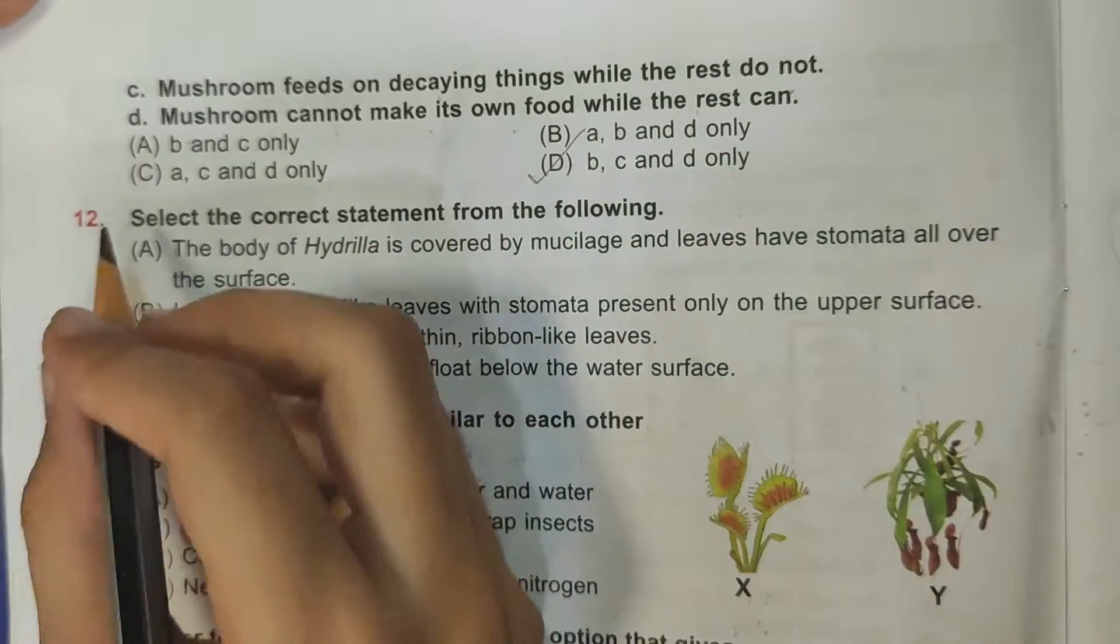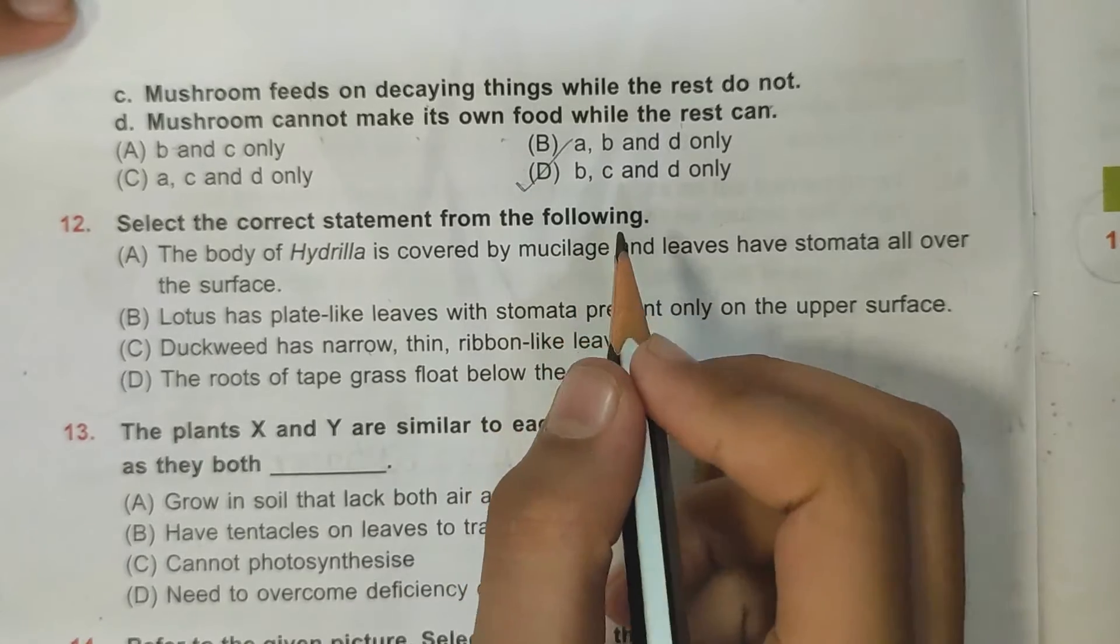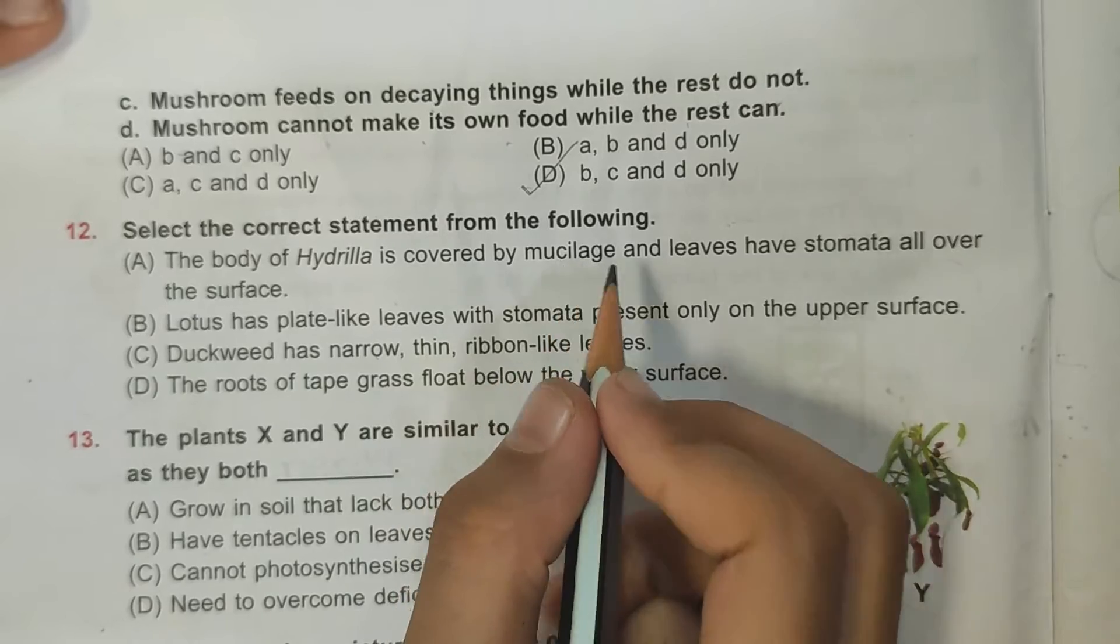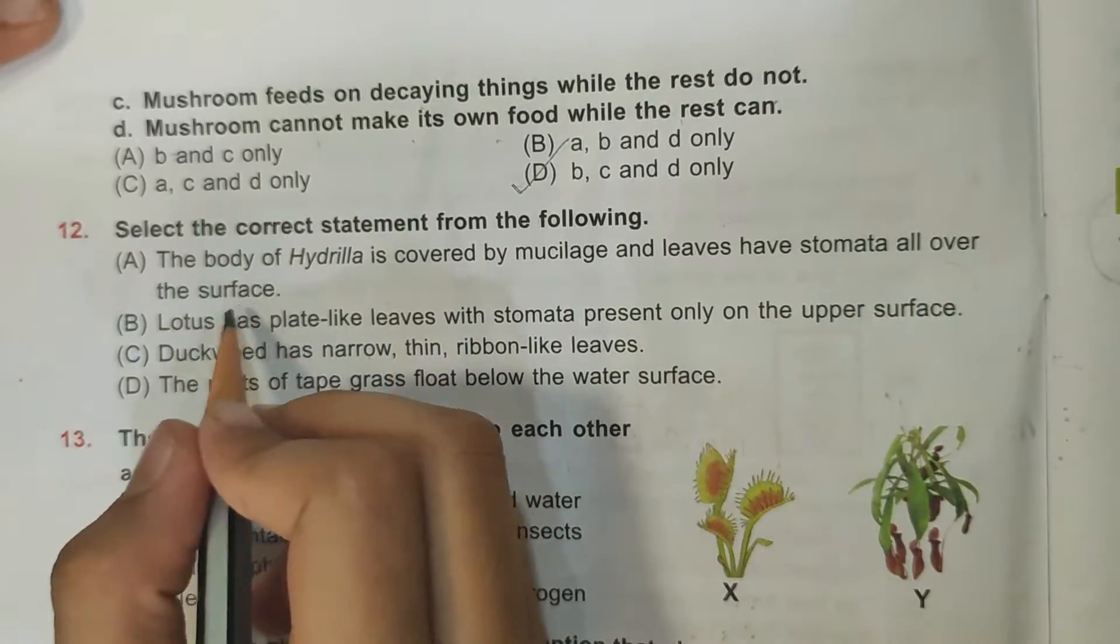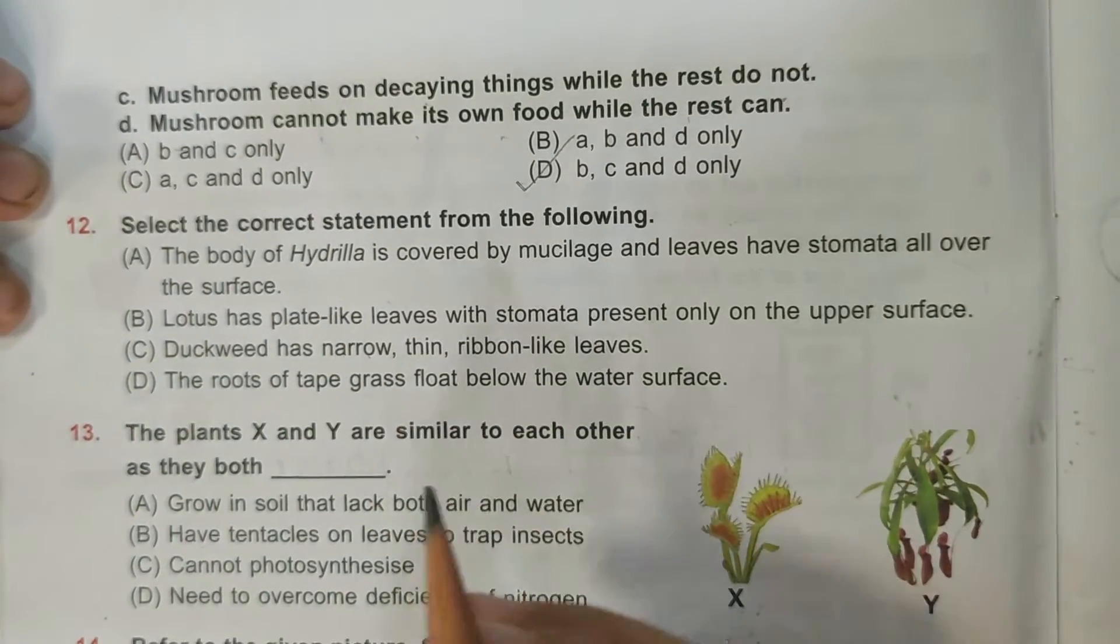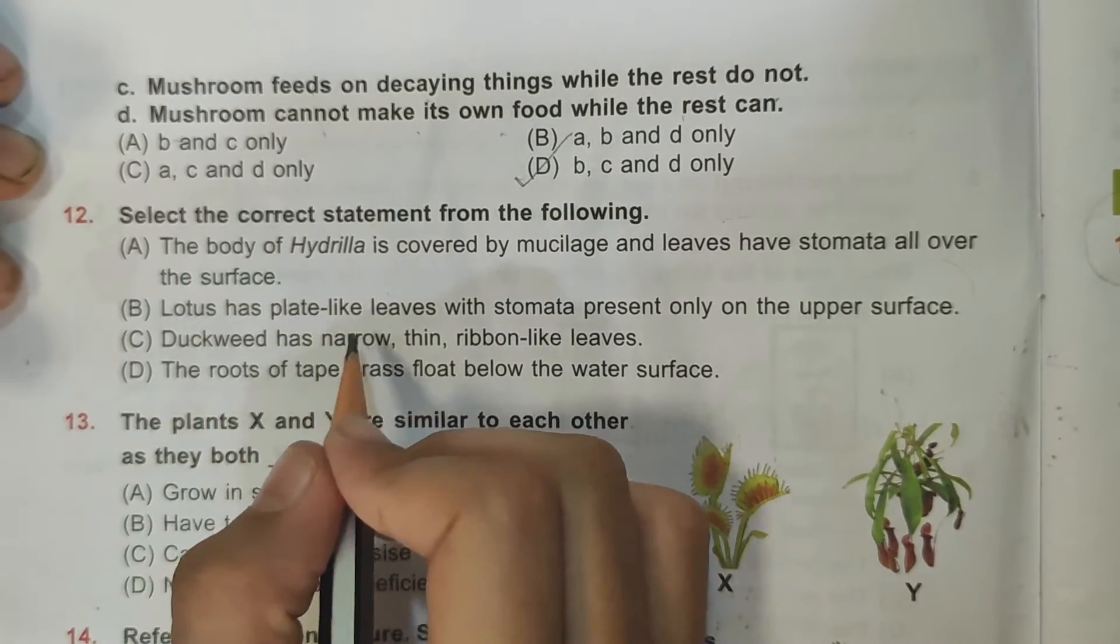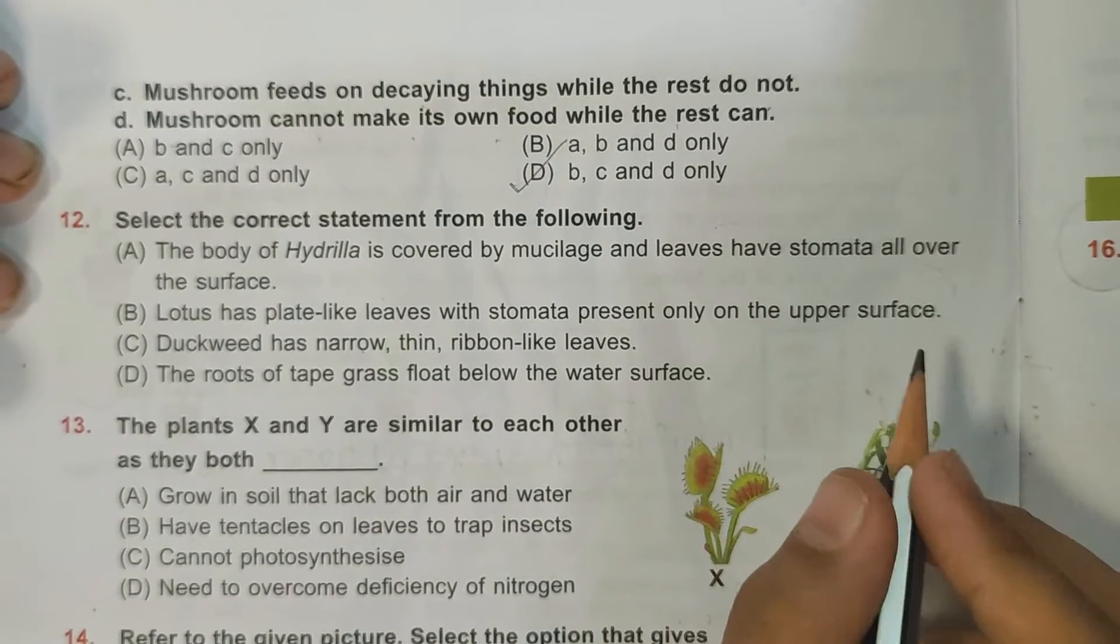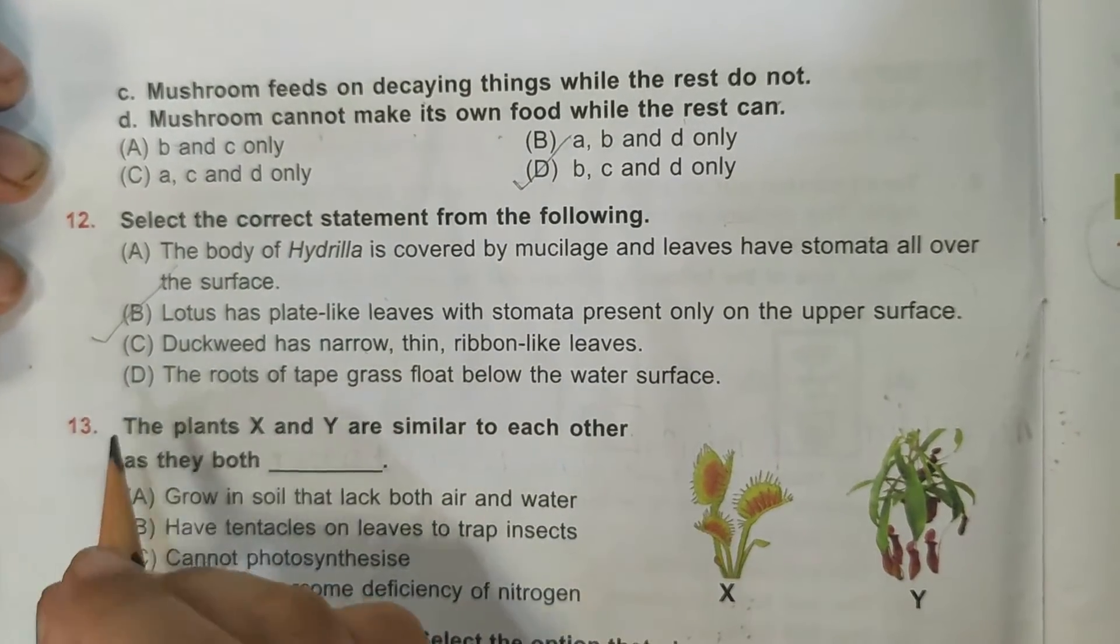Twelfth question: select the correct statement from the following. The body of Hydrilla is covered by mucilage and leaves have stomata all over the surface - no that's false because Hydrilla do not have stomata. B: lotus has plate-like leaves with stomata present only on the upper surface - that's true, so B is the correct answer.